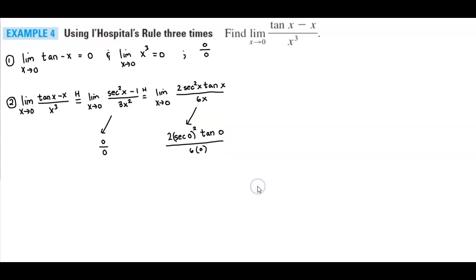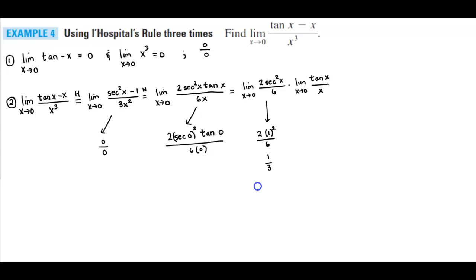Rather than applying the rule directly, we can separate the expression into two limits since secant of zero is one. We write it as the limit as x approaches zero of two times secant squared x over six, times the limit as x approaches zero of tangent x over x. The first limit evaluates to two times one squared over six, which reduces to one third. So this becomes one third times the limit as x approaches zero of tangent x divided by x.